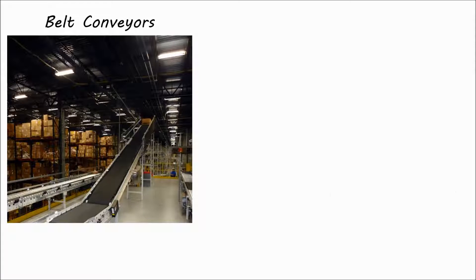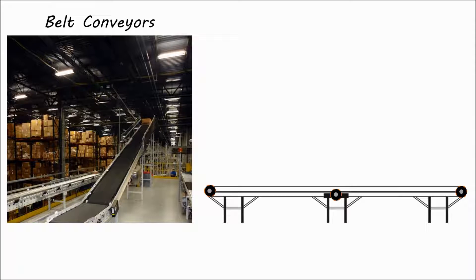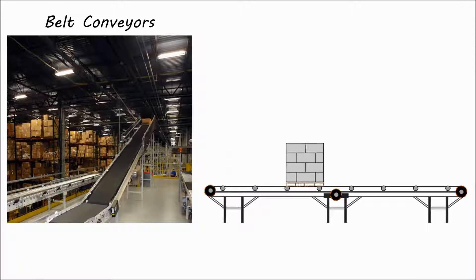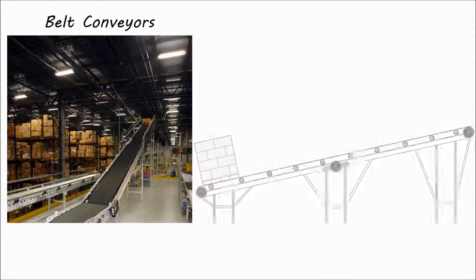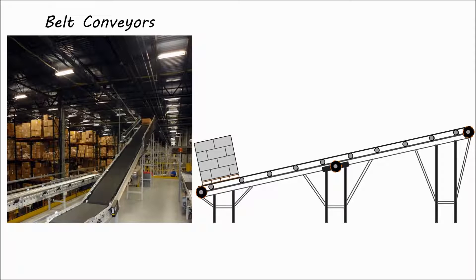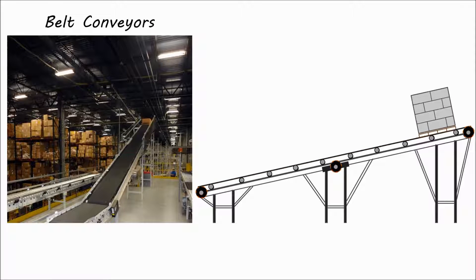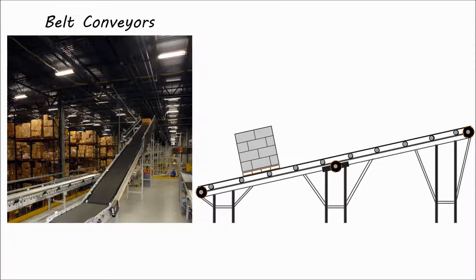A belt conveyor uses pulleys and a wide belt that are supported by rollers or a flat pan along its path to move product. High friction between the belt and the item allows these conveyors to move materials at a set speed on an incline or decline, making it a viable option for facilities that require transport of items to various levels.